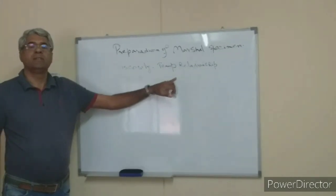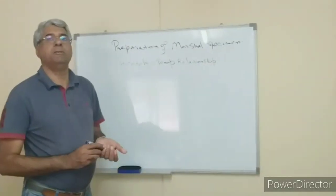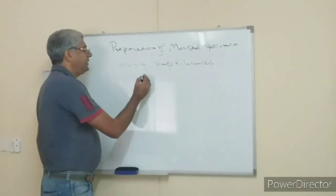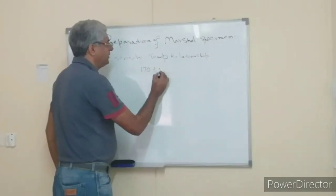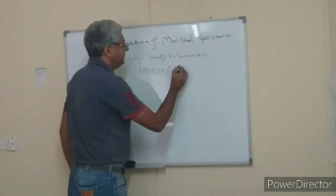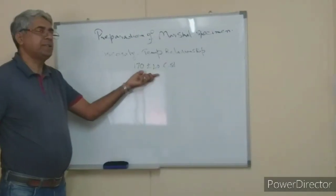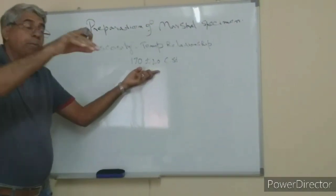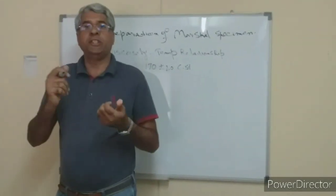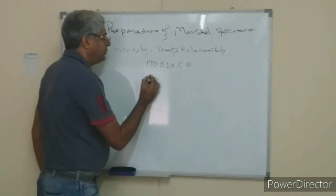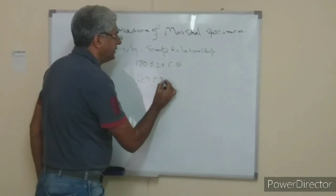According to the MS-2 guide for mix design development, the reference viscosity for mixing is 170 plus or minus 20 CST — CST being the unit of viscosity. Whatever temperature corresponds to this viscosity range will be used as the mixing temperature. For compaction, we need 280 plus or minus 30 CST.